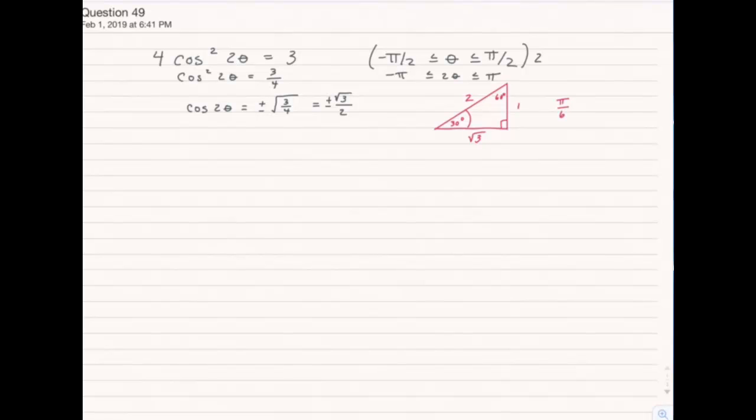So if I think of where in the range from negative pi to positive pi I've got an angle of pi over 6, well I have that at pi over 6, then at 5 pi over 6, and then negative pi over 6, and negative 5 pi over 6.